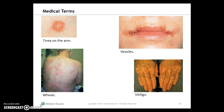Here we see tinea on the arms — a fungal infection of the hair, skin, and nails, commonly called ringworm. Wheals are reddish lesions that often change size and shape and extend into adjacent areas, usually associated with allergens. Vesicles are clear fluid-filled raised lesions commonly called blisters. Vitiligo appears as white patches on otherwise normal-looking skin, in areas that lack melanocytes.